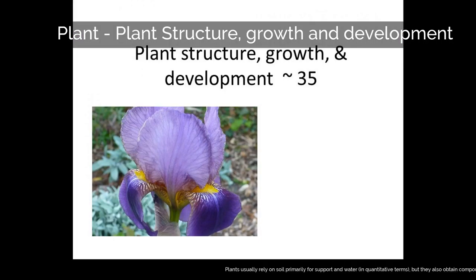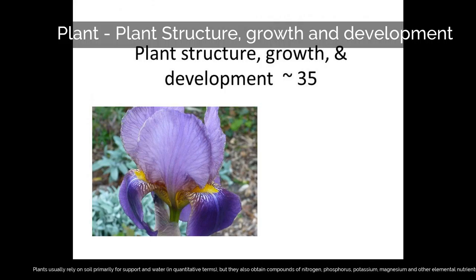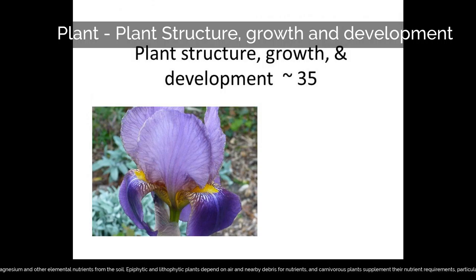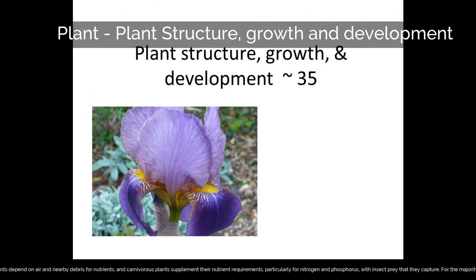Plants usually rely on soil primarily for support and water, but they also obtain compounds of nitrogen, phosphorus, potassium, magnesium and other elemental nutrients from the soil. Epiphytic and lithophytic plants depend on air and nearby debris for nutrients, and carnivorous plants supplement their nutrient requirements, particularly for nitrogen and phosphorus, with insect prey that they capture.